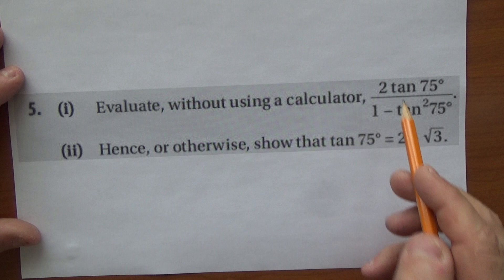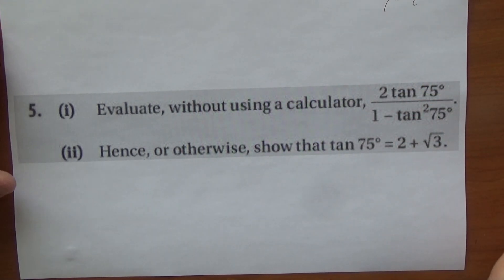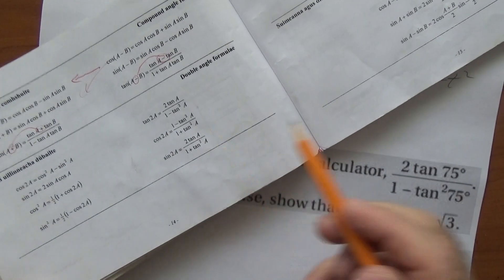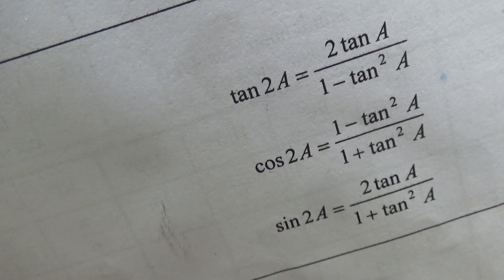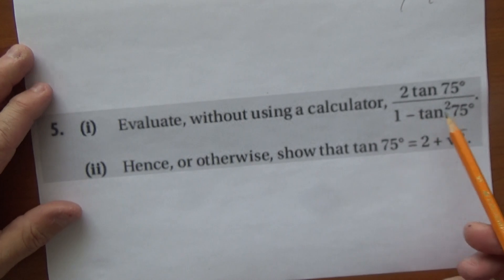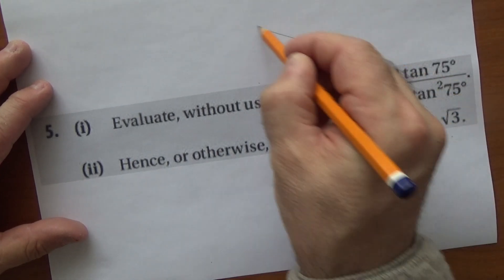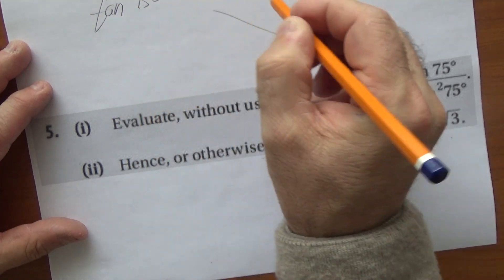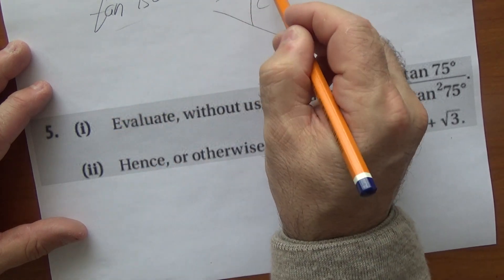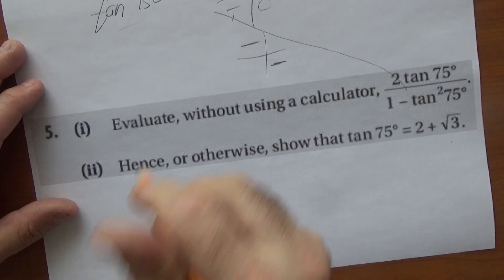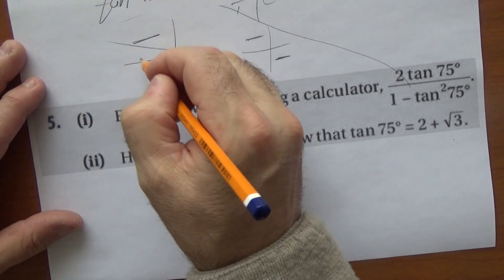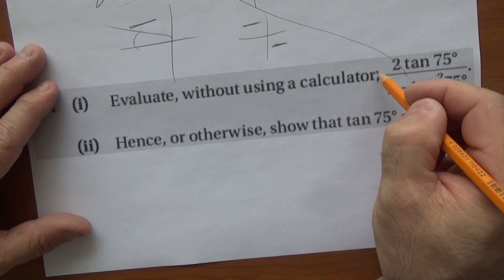Evaluate without using a calculator: the expression 2t/(1 - t²) is the formula for tan(2a). Once we work through this, it comes out to tan(150°). Using CAST, tan is negative in the second quadrant. The reference angle is 30°, and tan(30°) = 1/√3, so the answer is -1/√3.